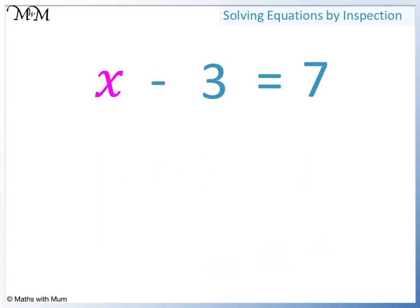x minus 3 equals 7. We think of the number that when we subtract 3 we get 7. 10 minus 3 equals 7, and so x equals 10.